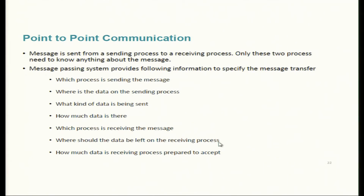For communication we must know which process is sending, where the data is (pass the buffer address), what data type and how many elements — through this it calculates how many bytes to transfer. We mention the data type and count so MPI calculates the byte size. Then we specify the receiver rank, the variable at the receiver side, and again the element count and data type on the receiver side — both should match ideally.